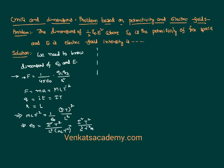So the dimensional formula of epsilon naught is M⁻¹ L⁻³ T⁴ I². This is obtained by bringing M and L³ from the denominator, combining the T exponents: T² × T² = T⁴, and I² remains in the numerator.